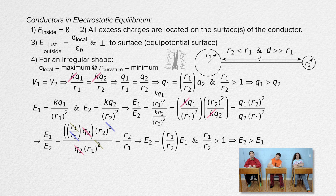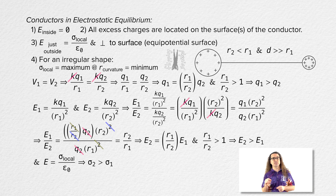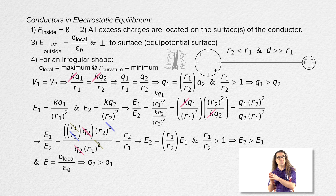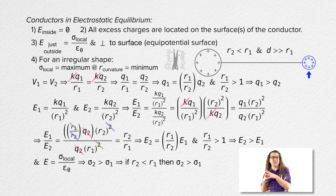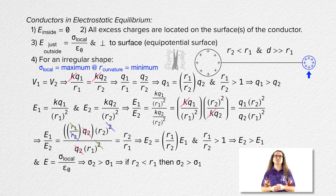Because we previously showed that the electric field at the surface of a conductor in electrostatic equilibrium equals the local surface charge density over the permittivity of free space, that means the surface charge density of sphere 2 is more than the surface charge density of sphere 1. We have just shown that where the radius of curvature of a conductor in electrostatic equilibrium is smaller, there is a larger surface charge density. In other words, where the local surface charge density is at a maximum, the radius of curvature of the conductor in electrostatic equilibrium is at a minimum.